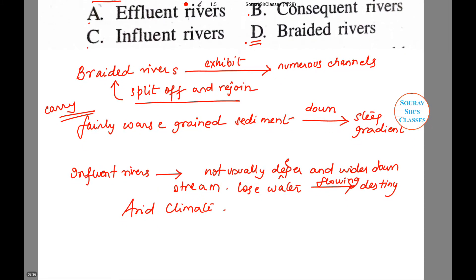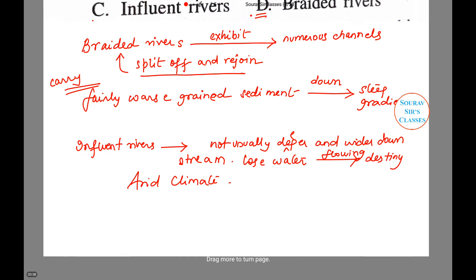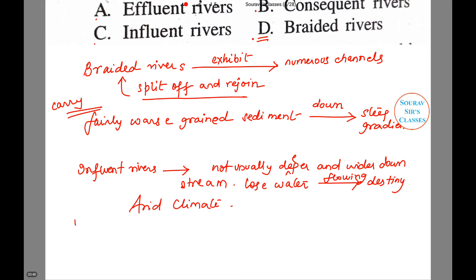Now let us move on to consequent rivers. Consequent rivers are those rivers that are the direct consequence of the original slope of the surface upon which they developed.